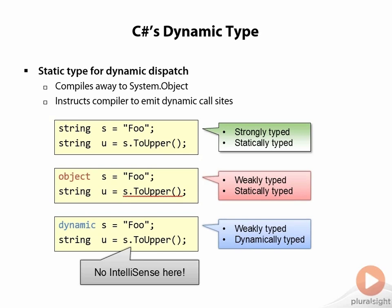This is still weakly typed and also dynamically typed, because the compiler doesn't do any static checking. So let's switch back to the desktop and take a look at C#'s dynamic type in action before we dive behind the scenes of the language feature.